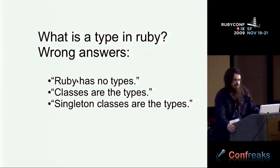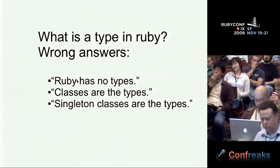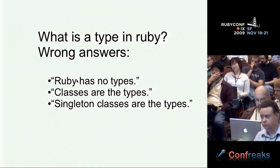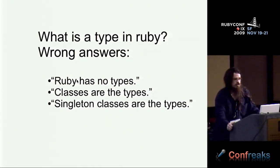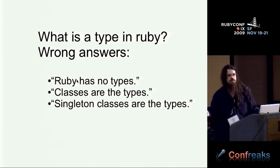So what is a type? Here's some wrong answers. Some people say Ruby has no types. While there are no type declarations, it is not true that Ruby values have no types. You might say that classes are the types. That's closer, and it's true enough in a static language. But it's leaving out an important aspect of the way Ruby works, which is singleton classes.